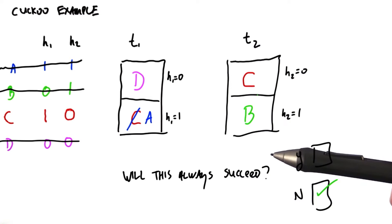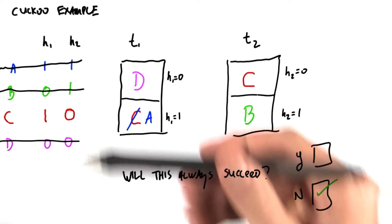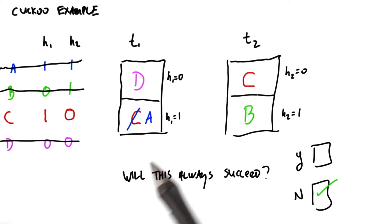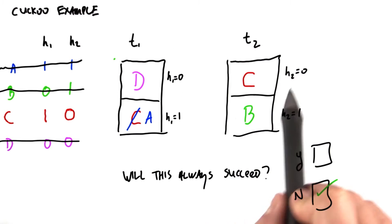But the easy counter example is to say that, well, here we have two hash tables. If we had three items, each of which had the same h1 and h2, so for instance, if we had three items where h1 and h2 were both 0, there's no possible way that we can fit them into the hash table because we only have two slots where any hash function is equal to 0.